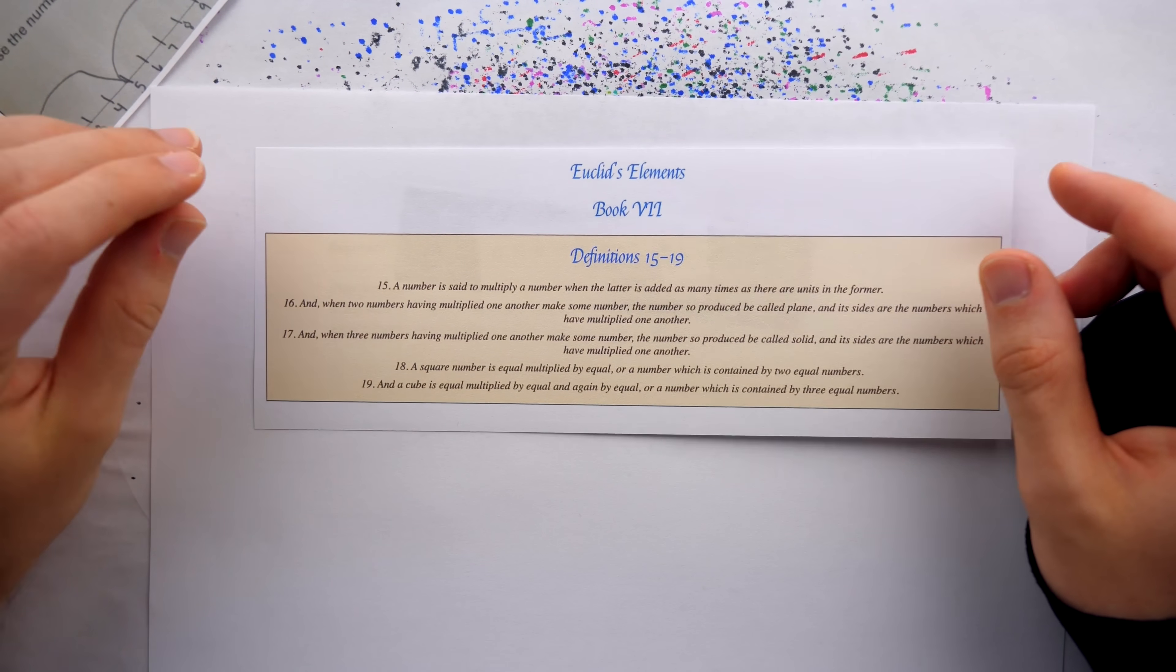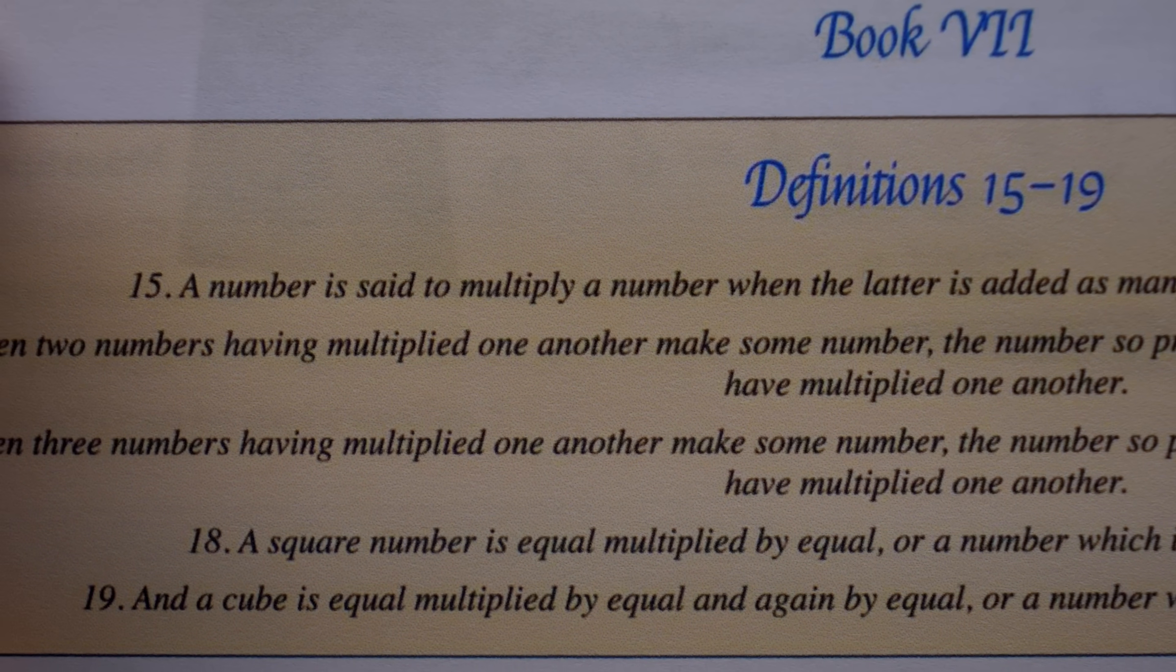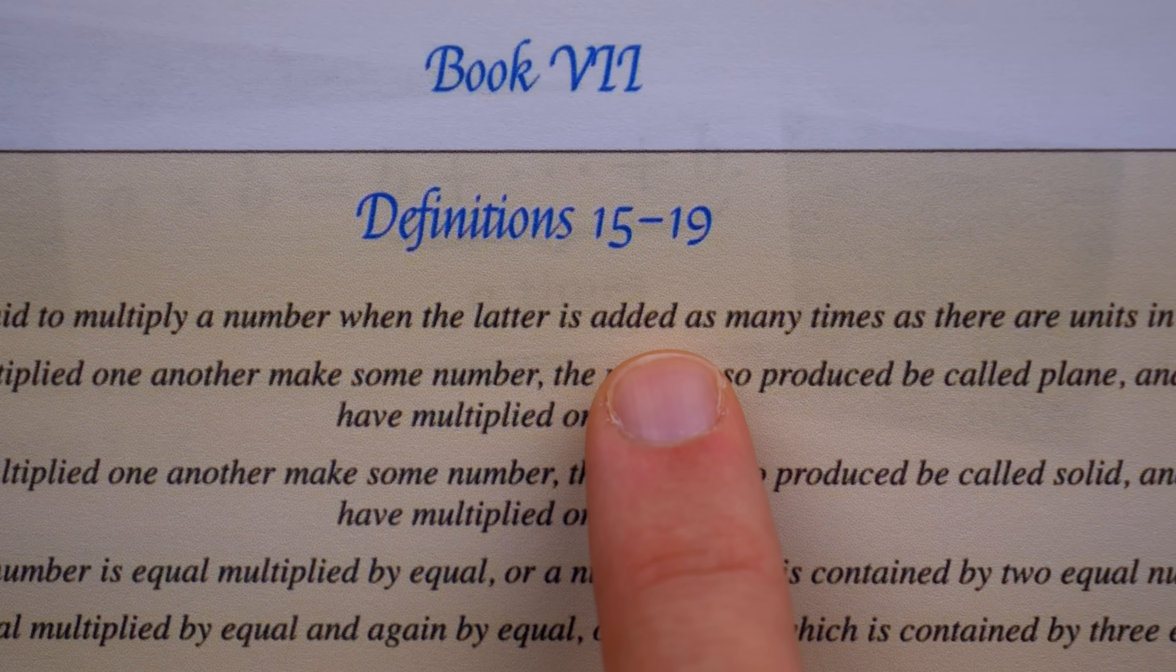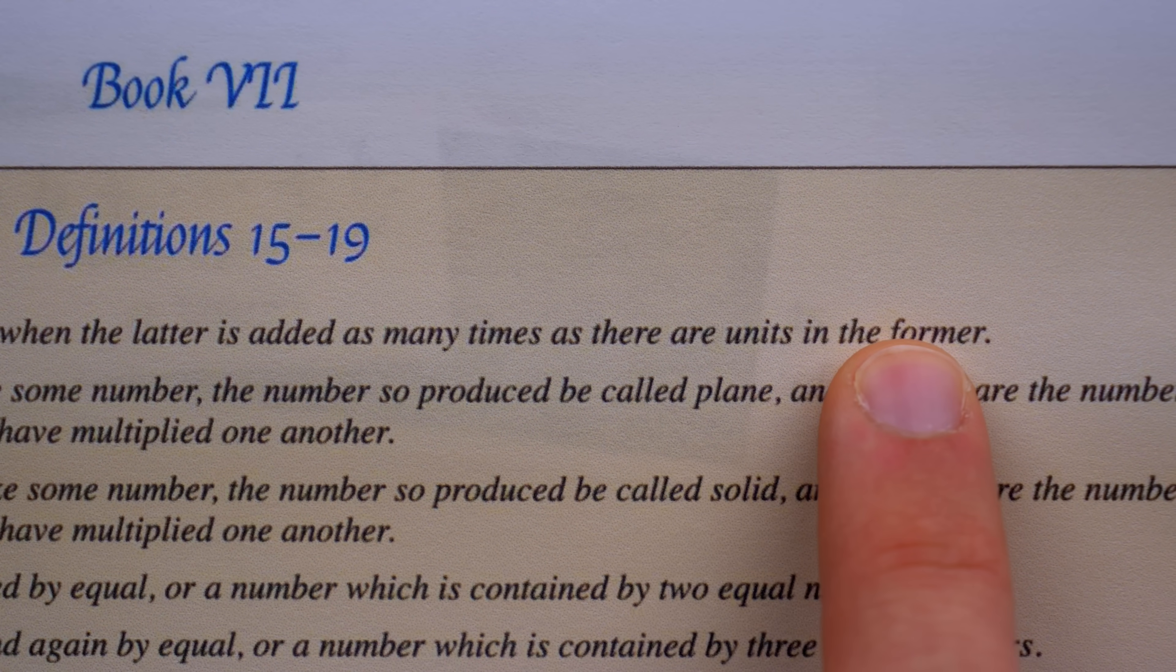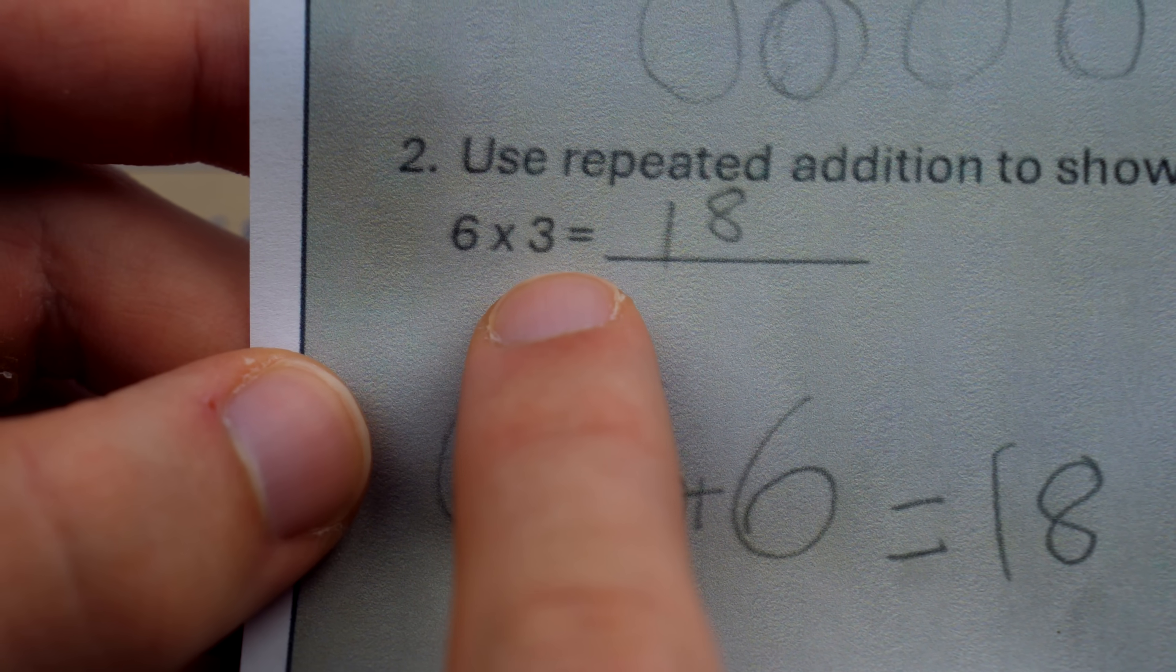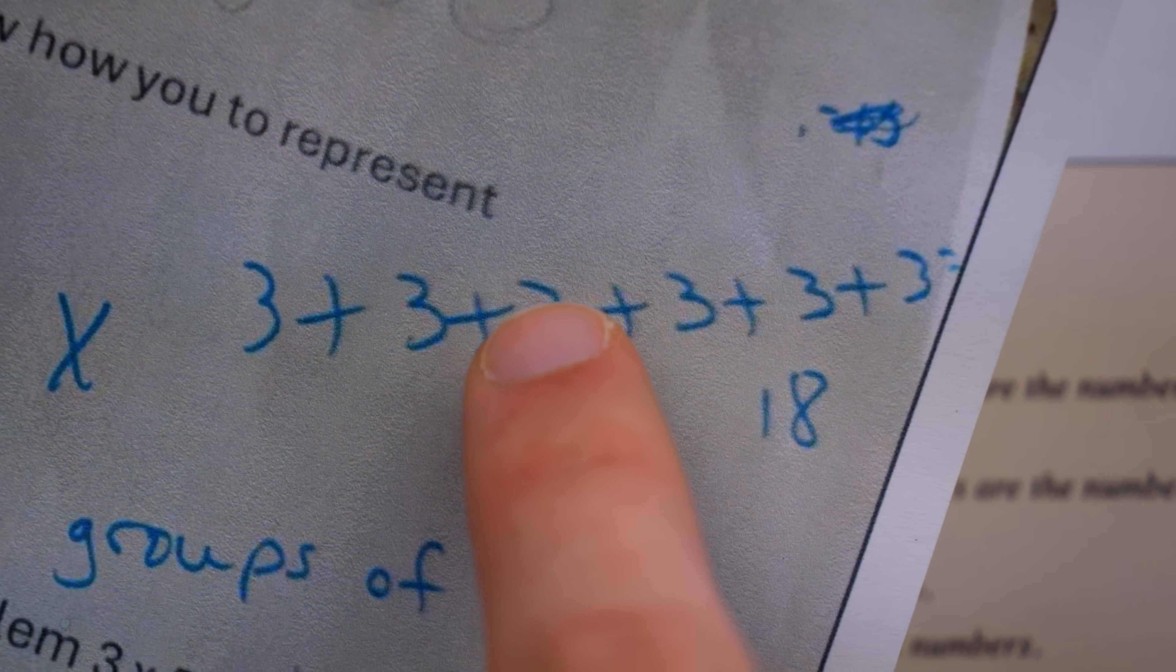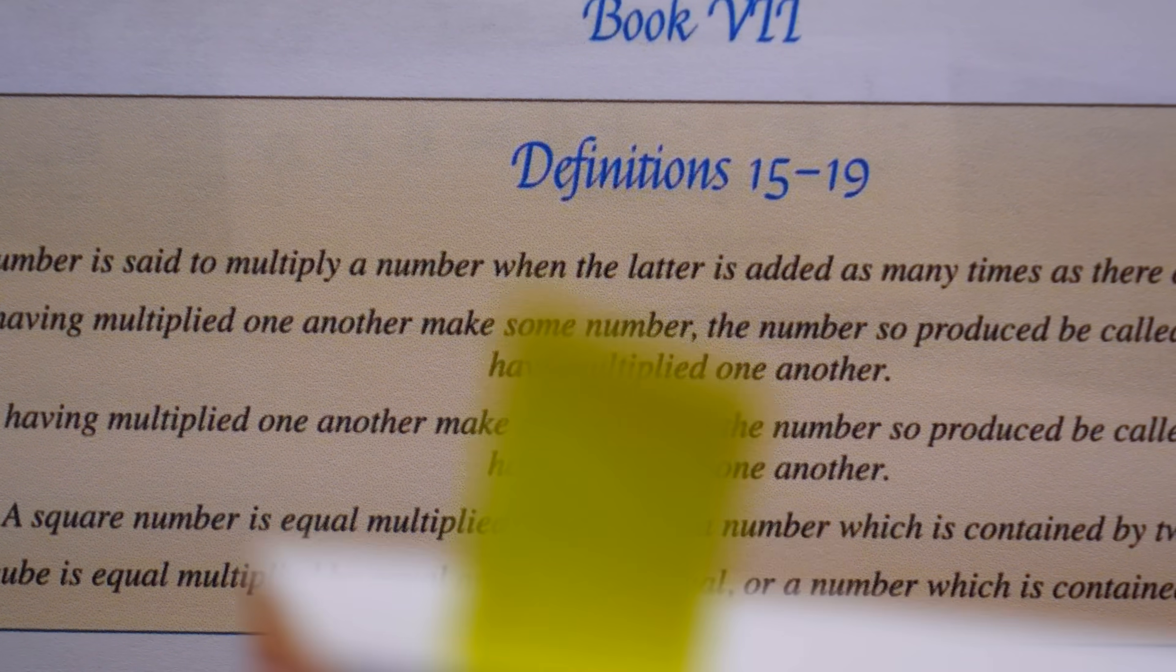Okay, well, here it is from the Clark University page, Book 7, Definition 15. A number is said to multiply a number when the latter is added as many times as there are units in the former. So when we look at six times three, the latter number, three, should be added six times, just as the teacher did. If Euclid says it, honestly, that is all I need. If Euclid wasn't enough, you could also check out chapter three of Euler's book on algebra.